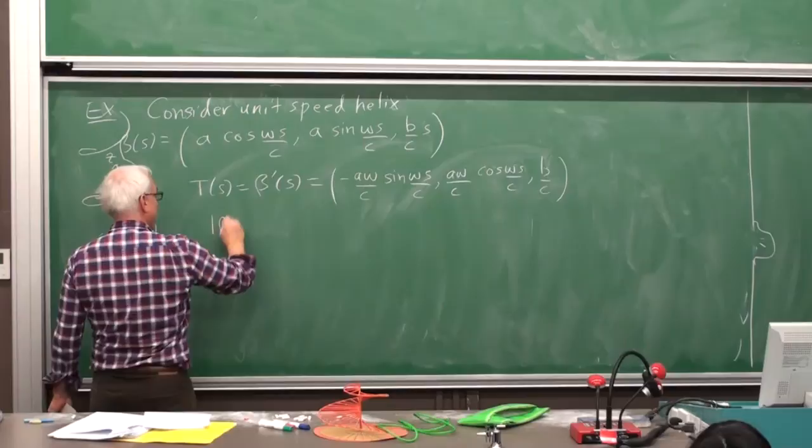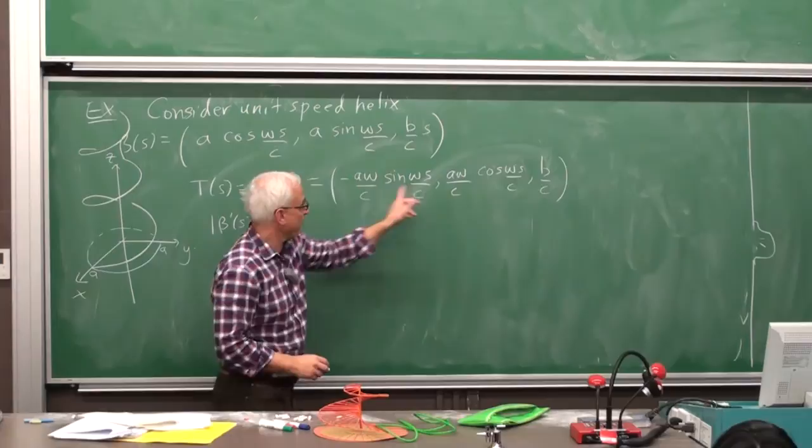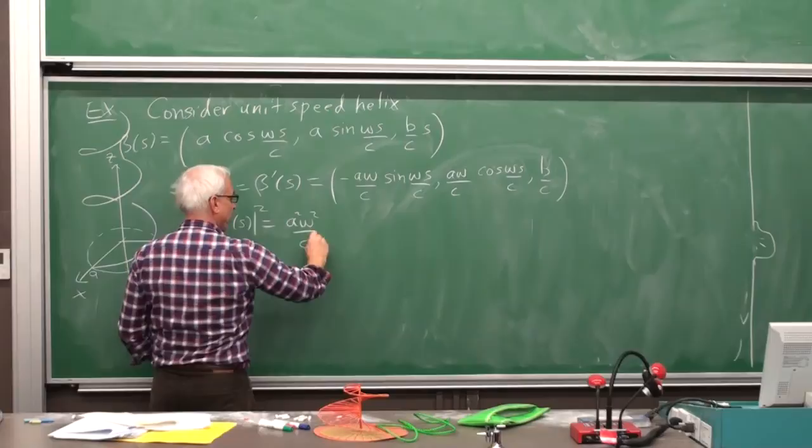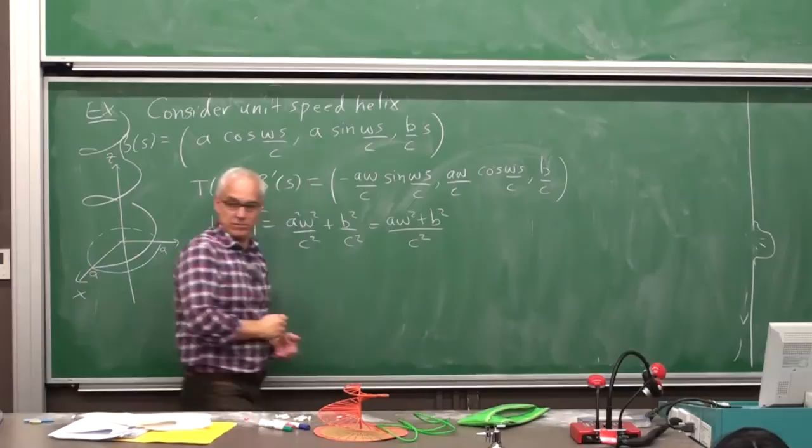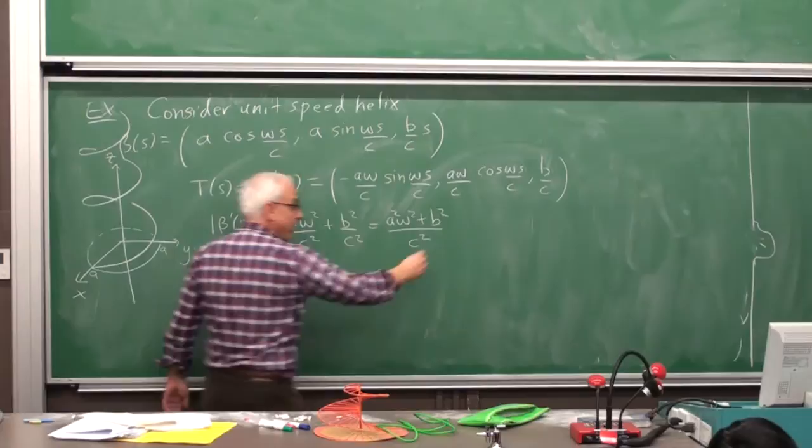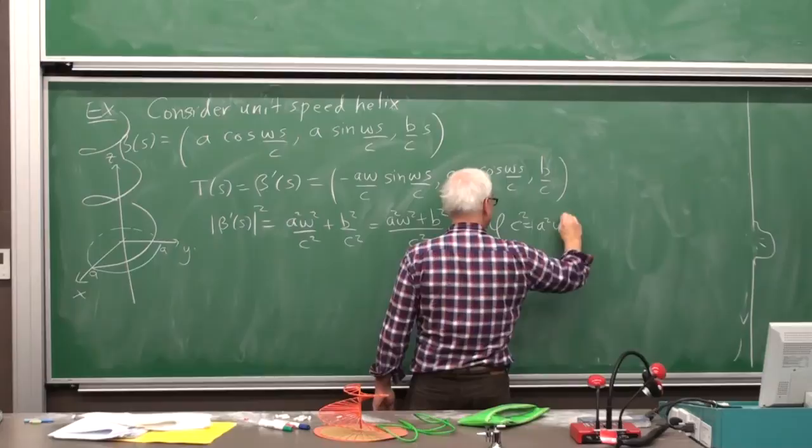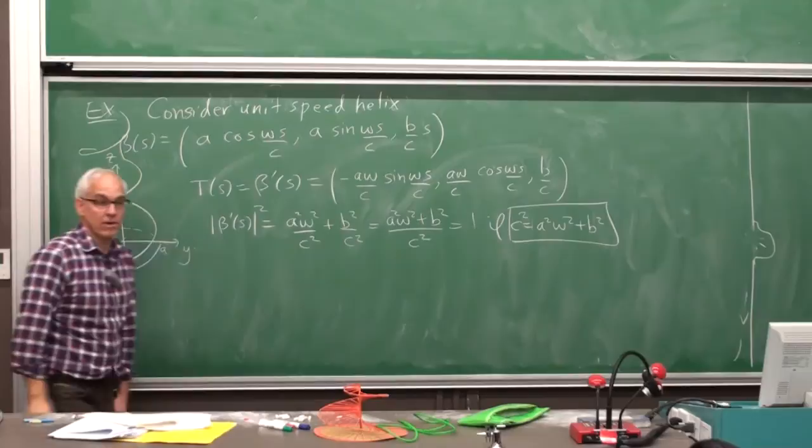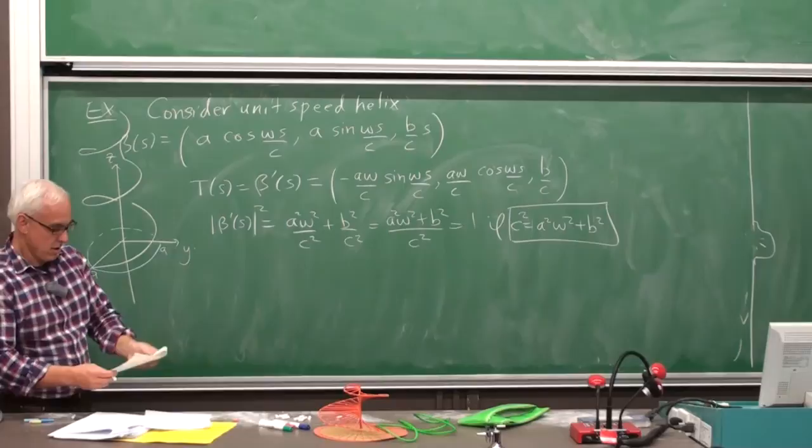And what is the size of that thing? So the size of beta prime of S, well, that's computed square, which is always easier. So we have to calculate, well, it's this squared plus this squared, and the sine squares and cosine squares will give us a 1. So we're going to get A squared W squared over C squared times 1 plus B squared over C squared for a total of A squared W squared plus B squared all over C squared. Now we want this to be equal to 1, and so we can make that happen if C squared equals A squared W squared plus B squared. So that's the condition that we're going to suppose. That'll guarantee that we have a unit speed curve.